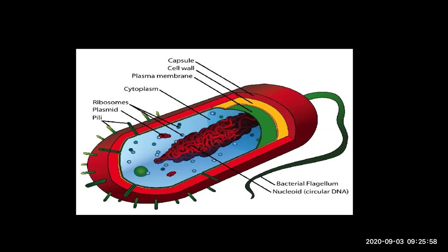The eukaryotic cell can be represented as a plant cell or an animal cell. Let's draw a diagram of a bacterial cell. The outer boundary cell wall is made up of peptidoglycan, and then there is a plasma membrane. Ribosomes are floating inside in the cytoplasm, and then there is the nucleoid region with chromosomal DNA, and also extra-chromosomal DNA called a plasmid.